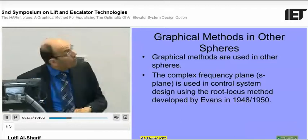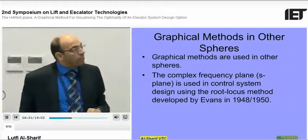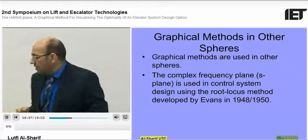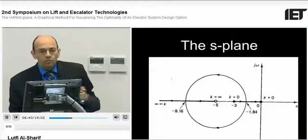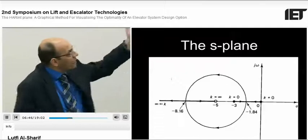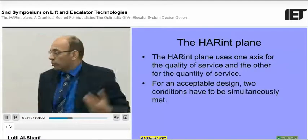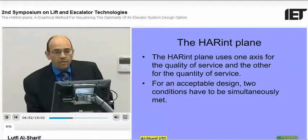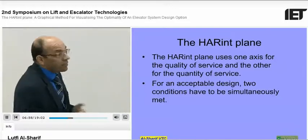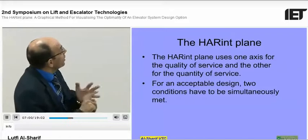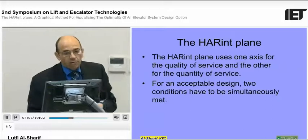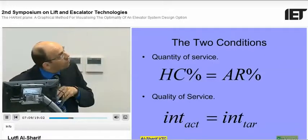Let's see what the Herent plane is. The Herent plane is not the only method — we saw the complex frequency domain S used in control system design, from Evans in 1948–1950. The Herent plane says: if I come to my user requirements, I basically start with an arrival rate — quantity — and an interval — quality. If I put one on the x-axis and one on the y-axis, we've got a plane. We have to meet both conditions of quality and quantity simultaneously.